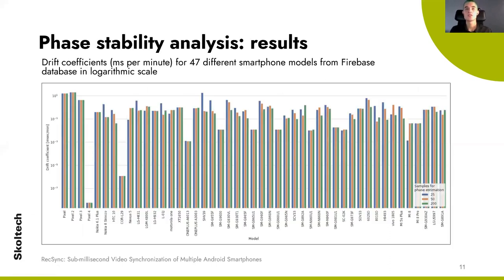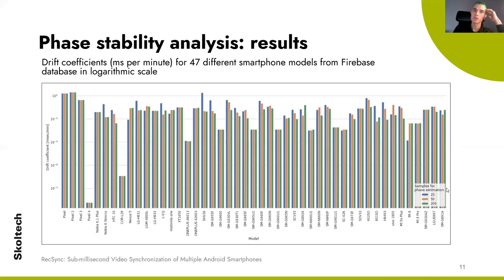Here you can see the phase drift estimated on the collected data, and its value is less than one millisecond per minute for most smartphones. This means that switching the camera from preview mode to video does not shift aligned phases, and the Leap Software Sync approach for phase shift alignment could be scaled to video recording. For most smartphones, 50 samples — or 50 consecutive timestamps, which is two seconds of camera stream — is enough to estimate the period.